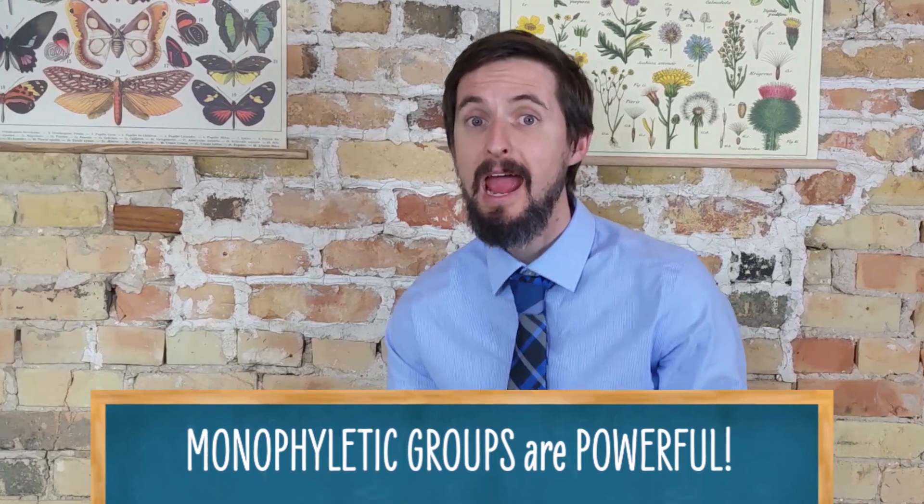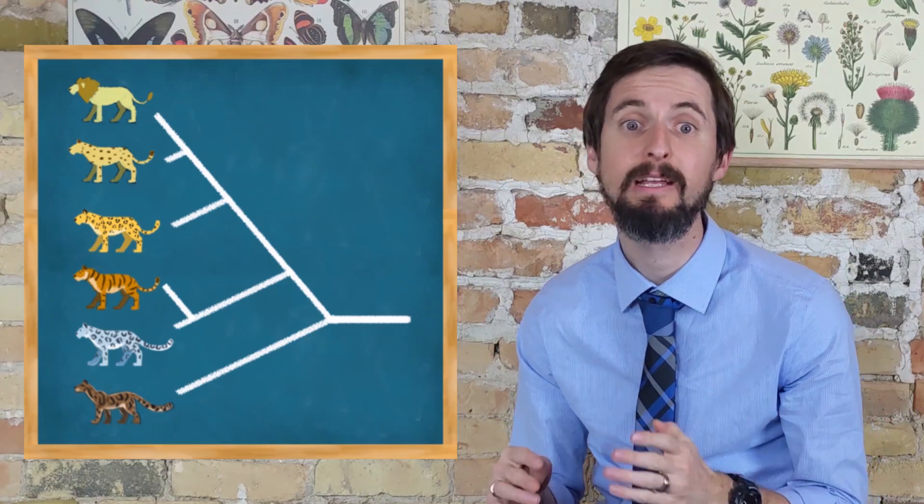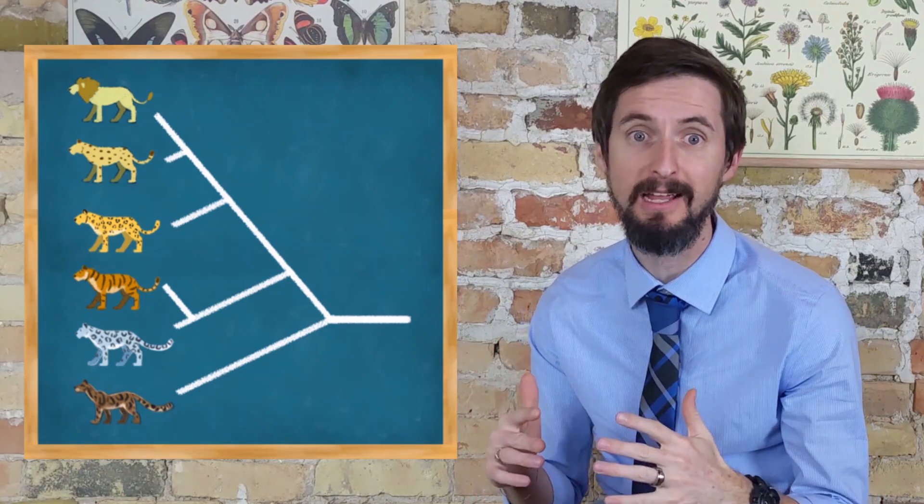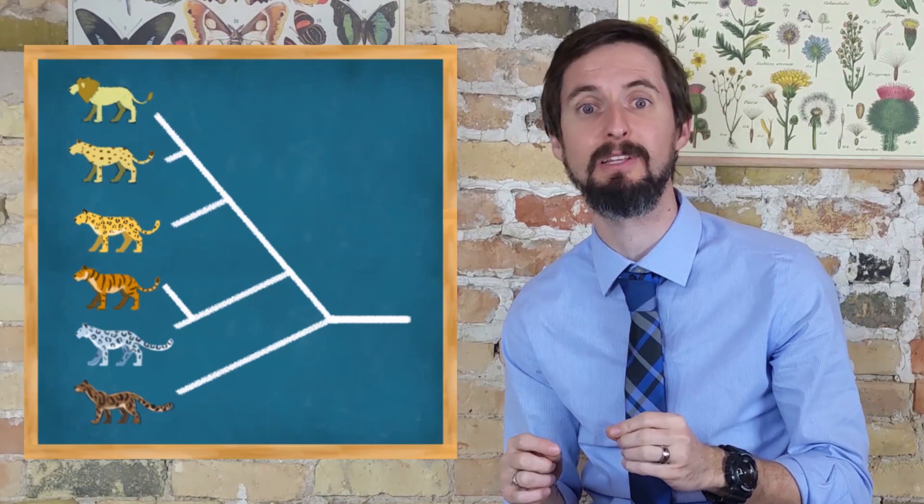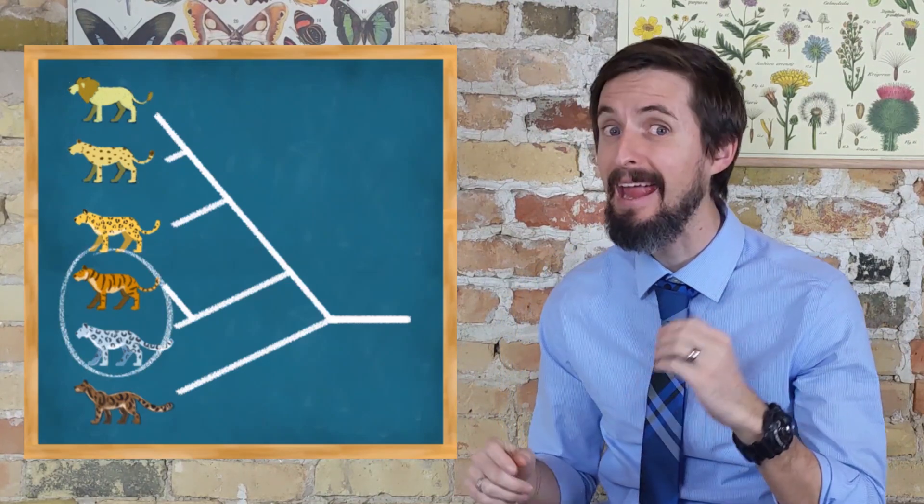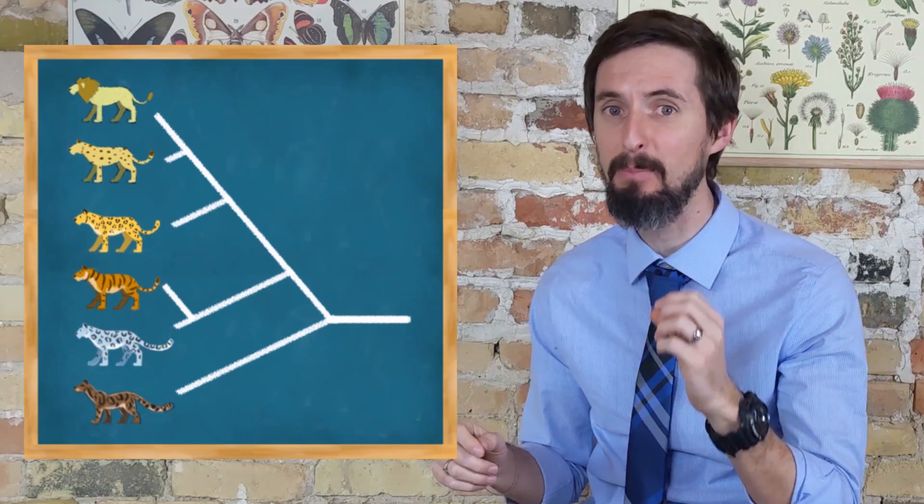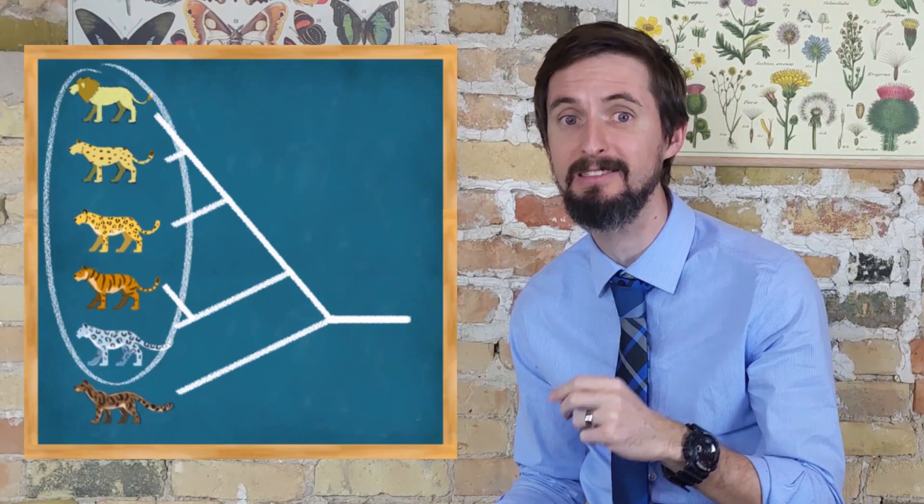And that takes us back to our phylogeny of big cats. Based upon this phylogeny, we can see that the closest relatives to lions are leopards. We can also see that the closest relatives to tigers are snow leopards. And we can see that leopards and snow leopards are both more closely related to lions, tigers, and jaguars than either of them are to clouded leopards.